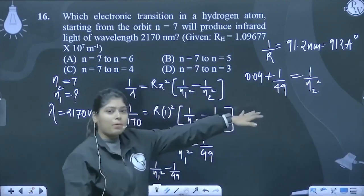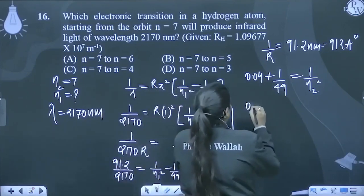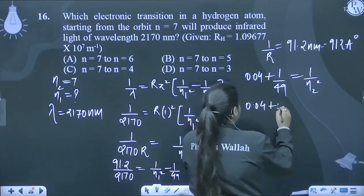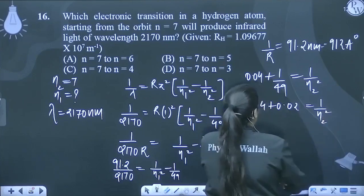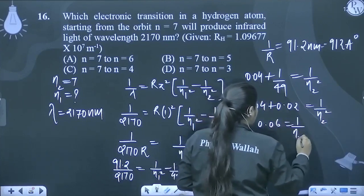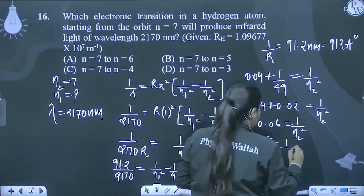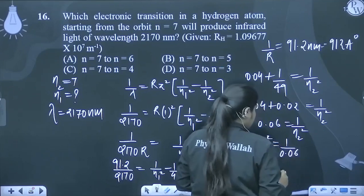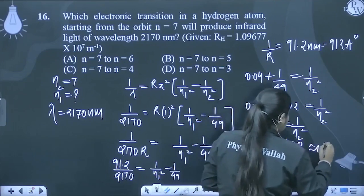1 upon 49 ya 1 upon 50, thik ya? That is, 1 upon 50 is 0.02. So, 0.04 plus 0.02 equals 1 upon n2 ka square. This comes out to be 0.06 equals 1 upon n2 square. So, herehaan se n2 ka square kitna aajayega? 1 upon 0.06. That is, 100 upon 6. Ye kitna aajega approximately? 16.